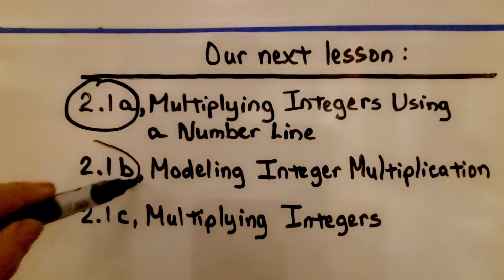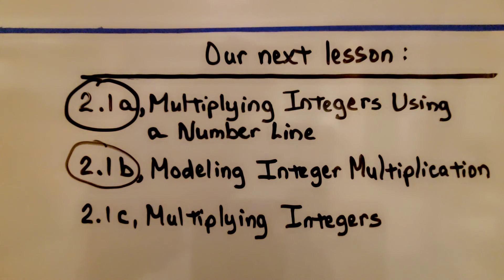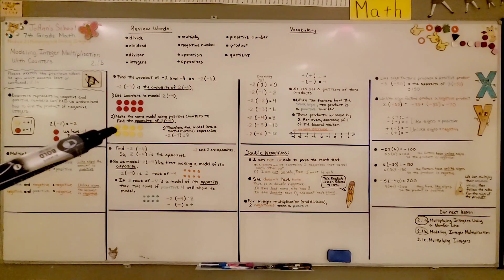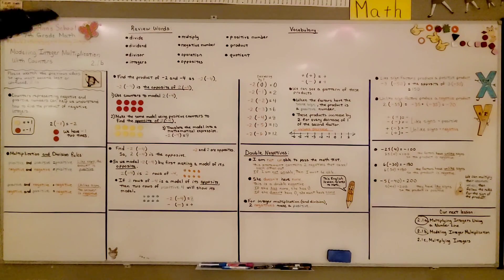We finish this lesson. We're going to talk more about absolute value when multiplying integers in the next lesson, 2.1c. When modeling with counters and multiplying a negative times a negative, we model the opposite — a positive times the negative — then use the opposite chips to go back to the original, and we see that a negative times a negative equals a positive. I hope you're doing well, and I hope you join me for the last part of the lesson. Bye!